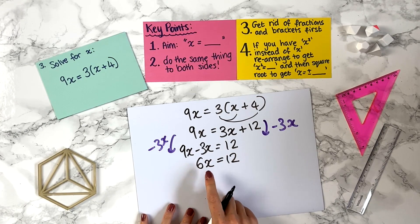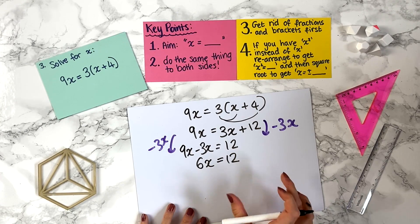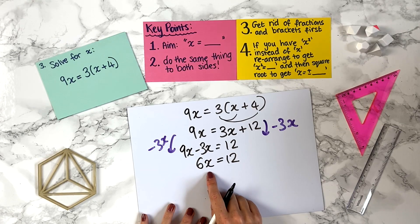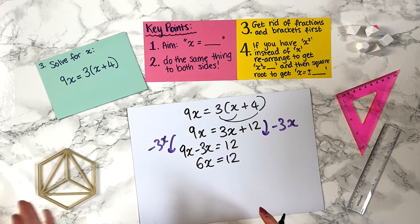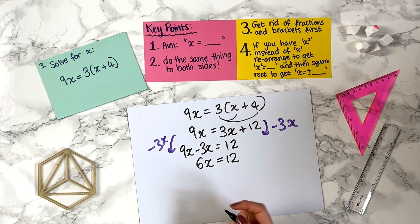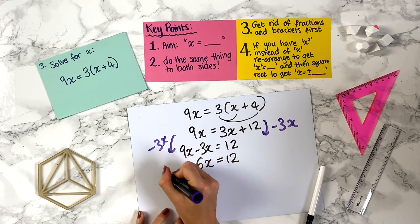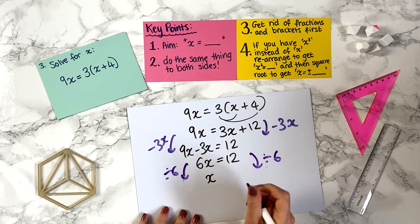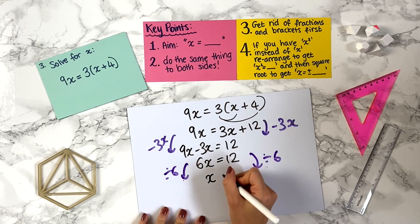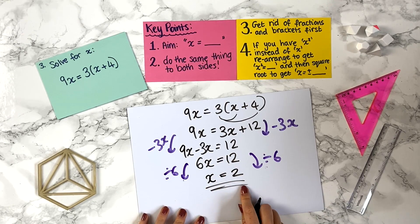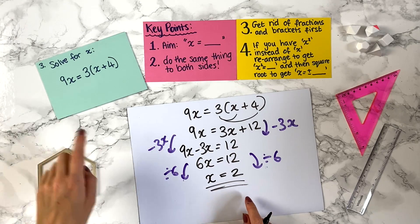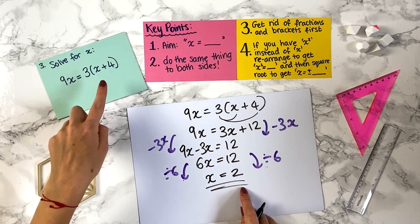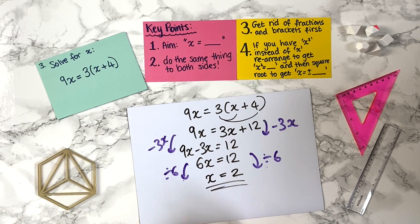Now we want x equals something without the 6 in front. Because this is 6 times x, we divide by 6 on both sides: 6x divided by 6 is x, and 12 divided by 6 is 2. So the answer is x equals 2. I really recommend checking this by substituting 2 into both sides and making sure they're equal.